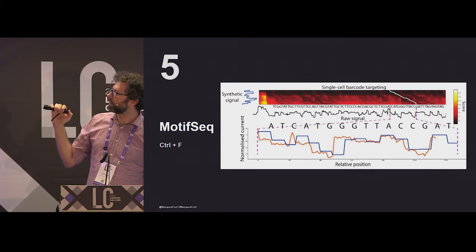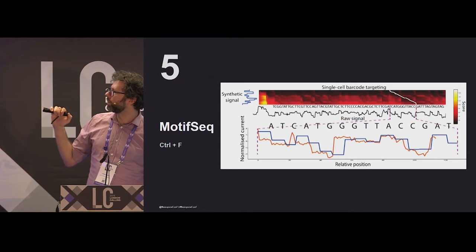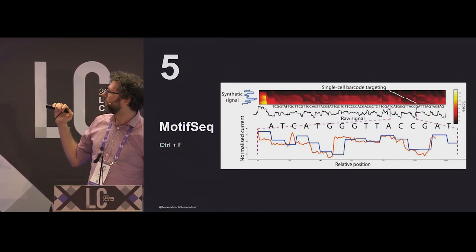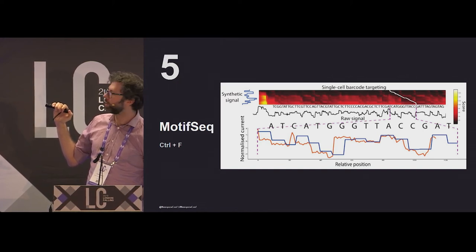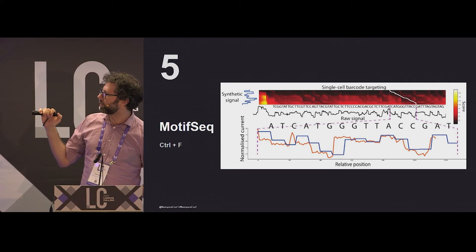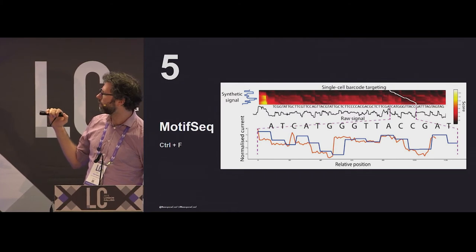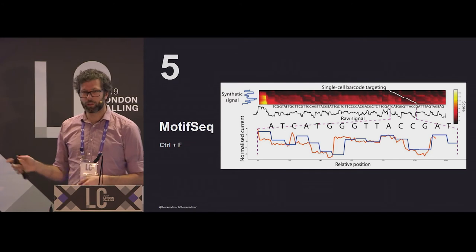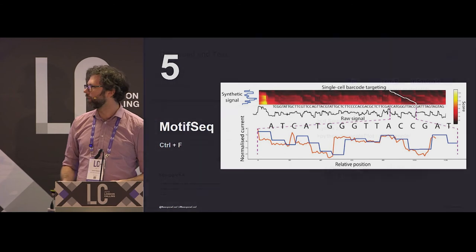And then we use a dynamic programming matrix to scan across the raw signal, and then we can find the best path through that matrix. And here, when you extract the signal, you can see it's a little bit warped, but it generally follows the same ups and downs as the synthetic signal. Now this is quite useful if you want to find something very specific, or check that something's there.